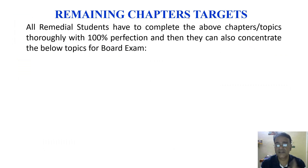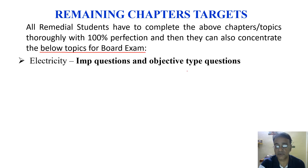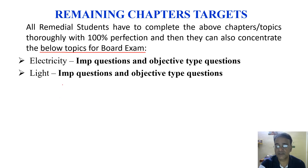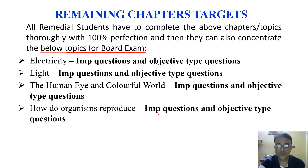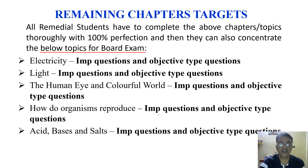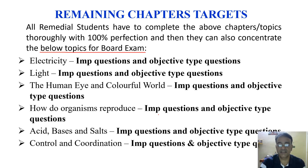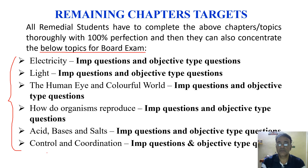All remedial students must complete the 7 chapters mentioned thoroughly with 100% perfection. Then they can also concentrate on the following topics for the board exam: Electricity — important questions and objective type questions; Light — important questions and objective questions; Human Eye and the Colourful World — only important questions and objective type questions; How Do Organisms Reproduce — important questions and objective type questions; Control and Coordination — important questions and objective type questions. All these are available in my minimum level study material and the link will be in the description. If students do all this well, I am sure they will score more than 60 marks out of 80.